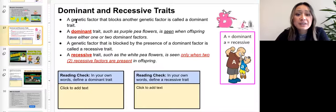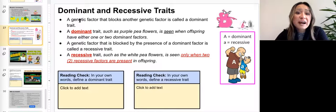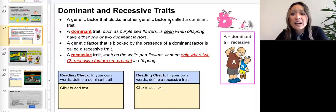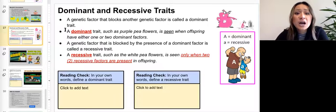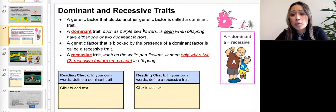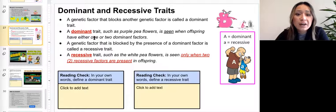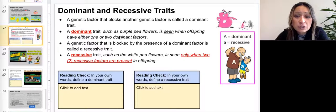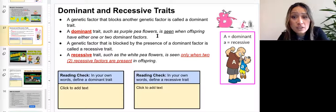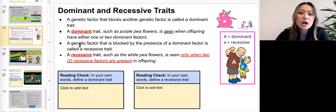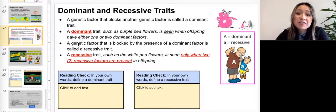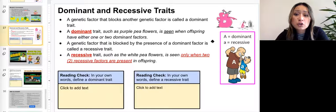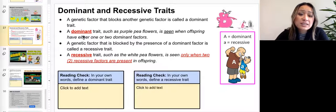Slide 27. Dominant and recessive traits. A genetic factor that blocks another genetic factor is called a dominant trait. A dominant trait, such as purple flowers, is seen when offspring have either one or two dominant factors or two dominant factors or alleles. Remember we learned about alleles with letters. A genetic factor is blocked by the presence of the dominant factor. This trait is called recessive.